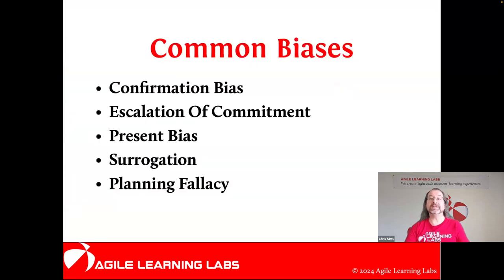We're going to look at these five: confirmation bias, escalation of commitment, present bias, surrogation, and the planning fallacy.